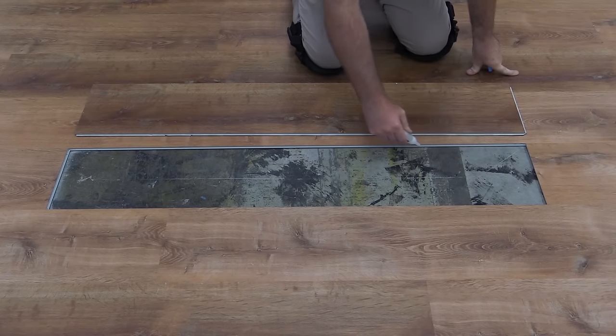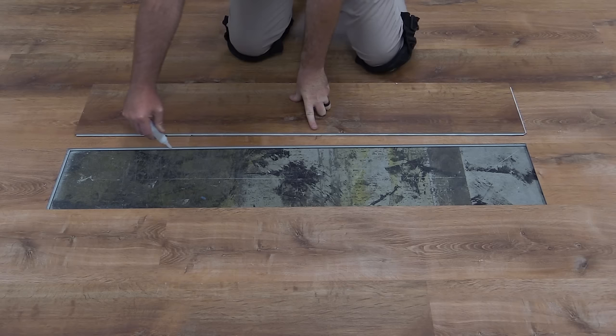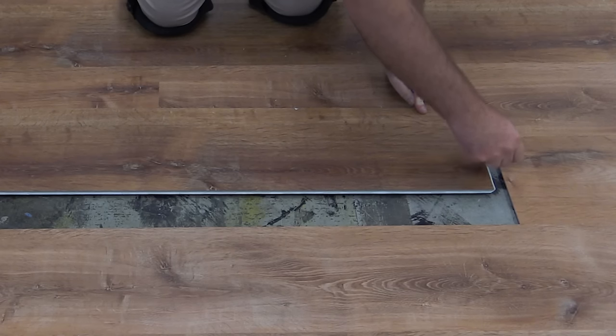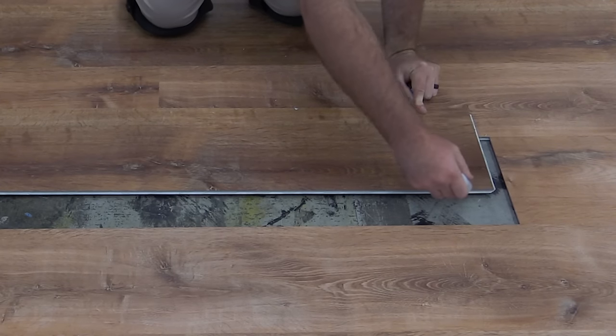Apply a scant bead of cyanoacrylate adhesive to the exposed groove sides of all the flooring surrounding the repair. Then apply a scant bead of adhesive to the groove sides of the replacement plank.